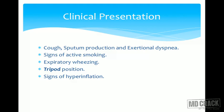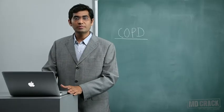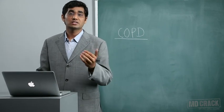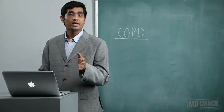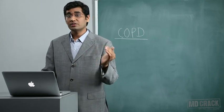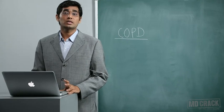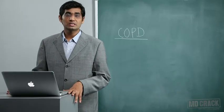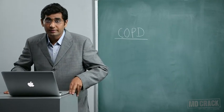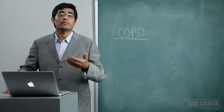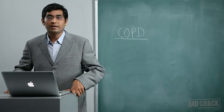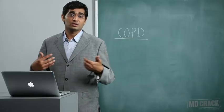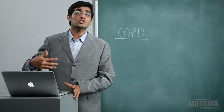Clinical presentation: patients may start with cough, sputum production, and exertional dyspnea. Signs of active smoking include odor of smoke, staining of cigarettes on nails and even on lips — so you should look for these even if the patient denies smoking. There is an expiratory tripod position: the patient leans forward on their upper limbs to get help from accessory muscles, which gives them relief.